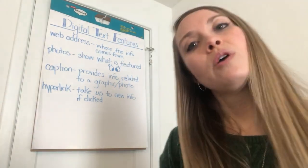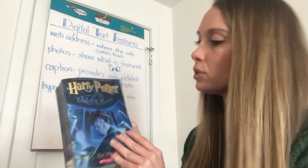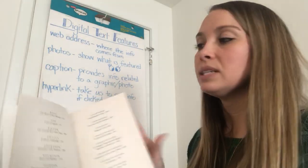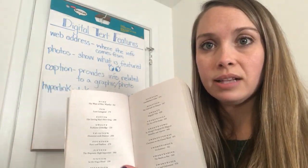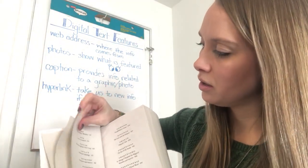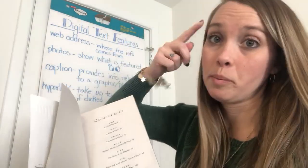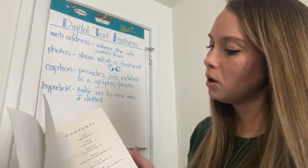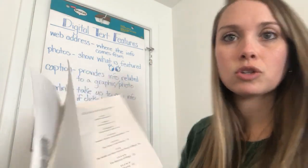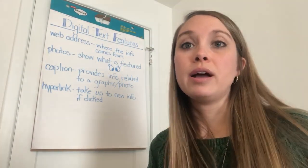We also know that a table of contents can be found in regular novels — like Harry Potter, Tale of Despereaux, or Because of Winn-Dixie. You can see there are a lot of chapters listed and it even says 'contents,' which helps you remember: table of contents. It tells you chapter one and the page, chapter two and the page. Some of the other text features we talked about this year would be an index.